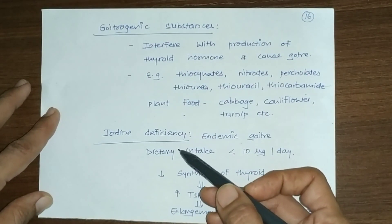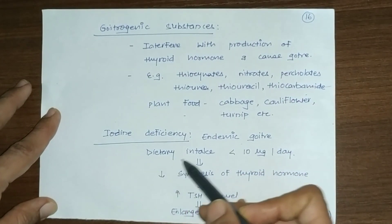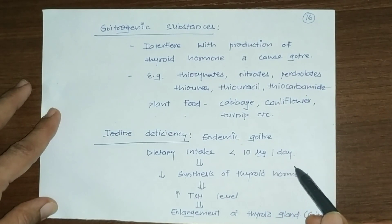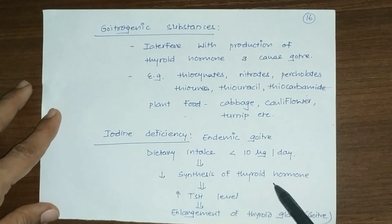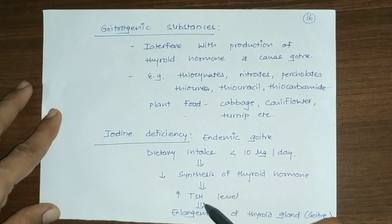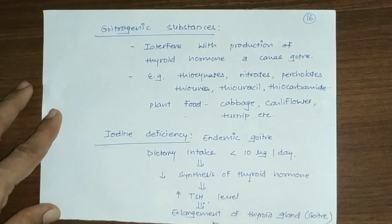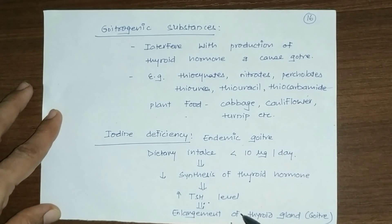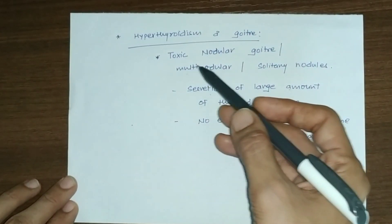Another cause of goiter is iodine deficiency in the diet, known as endemic colloid goiter. When dietary iodine intake is less than 10 micrograms per day, thyroid hormone synthesis decreases. Loss of negative feedback causes TRH concentration and secretion to increase. TRH stimulates the thyroid gland, but without sufficient iodine the gland enlarges without increased thyroid hormone production.